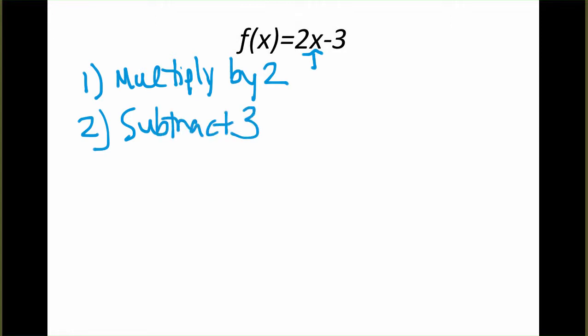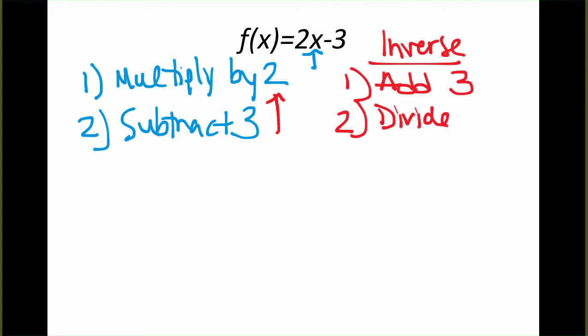What we have to remember when we're finding the inverse is we're going to do the opposite operation in the opposite order. We start from the bottom, and that becomes our first operation. So we're going to start with the opposite of subtracting 3, which is addition. So we first will add 3, and then the next thing we had done was multiply by 2, and the opposite of multiplication is division. So we will then divide by 2.